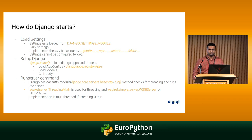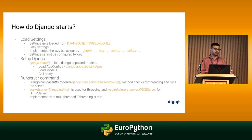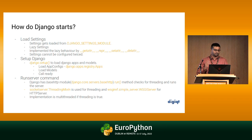There is another way to load settings without using a module: a method called configure() which accepts key-value pairs. However it needs to be called before the server starts. Once configured with configure(), you cannot configure it again — Django raises an exception saying you cannot configure twice, because you already loaded settings with that method or with the module.